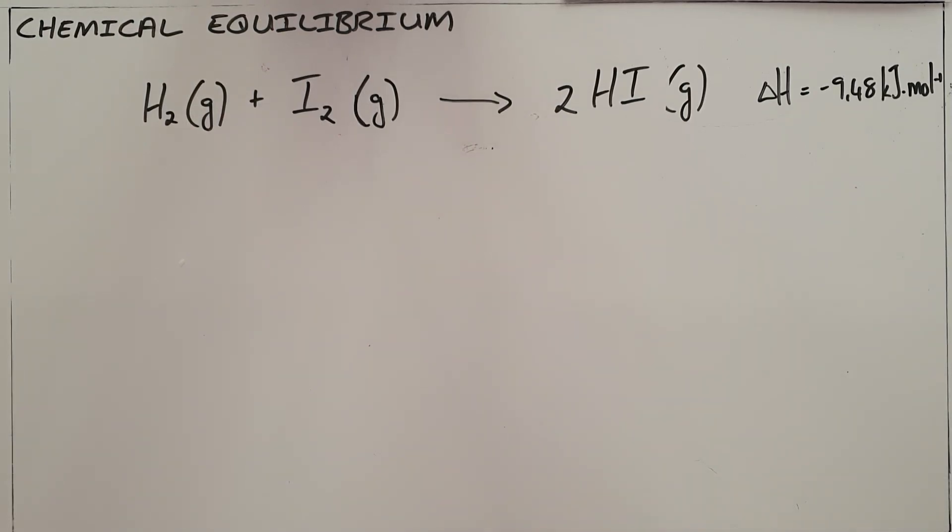There are two new concepts required to understand chemical equilibrium. The first one is the idea of what's known as either a closed or an isolated system. This is a system in which matter cannot enter or leave the system.